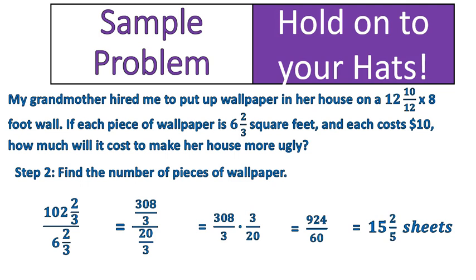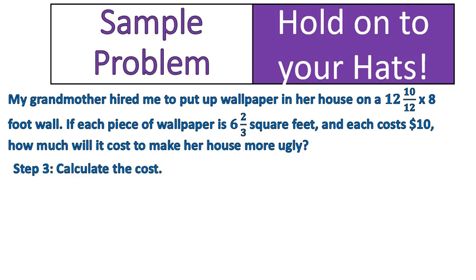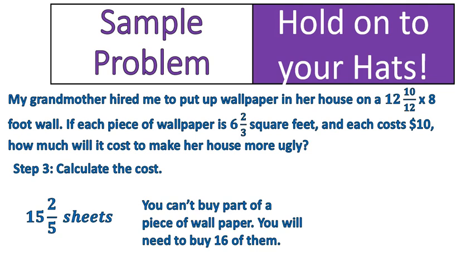So that is the most math-heavy step — finding the number of pieces of wallpaper needed to cover the wall. Moving on to step number three, we calculate the cost. There are fifteen and two-fifths sheets of wallpaper needed, but you can't buy two-fifths of a sheet, so you would have to buy sixteen full sheets. That makes the math easier: simply multiply sixteen times ten and find that it costs one hundred sixty dollars. We used stacked fractions, found the square footage, found how many pieces it would take, and then calculated the cost.